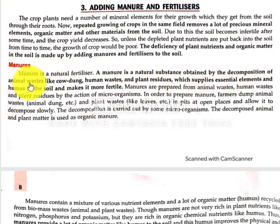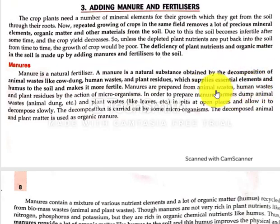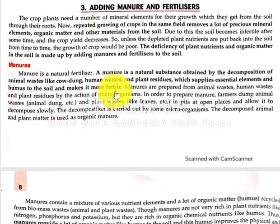Manure is a natural substance that is decomposed. You can see it is animal-based — like cow dung, human waste, plant residues — all of which the soil provides.